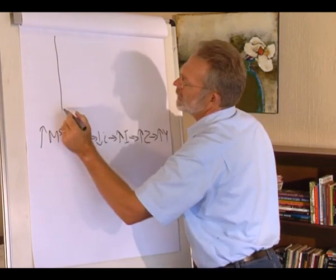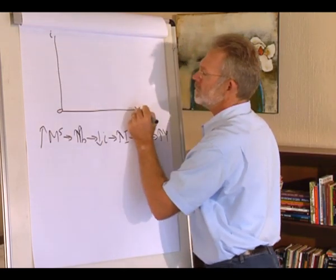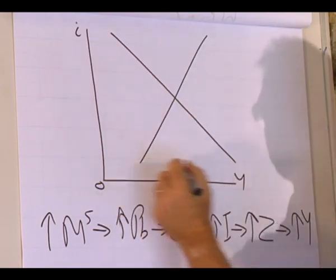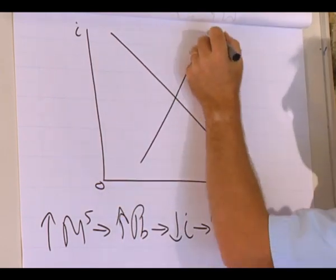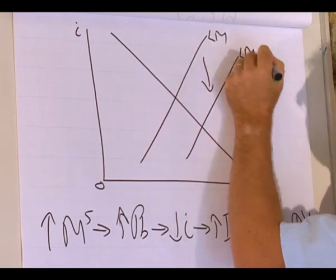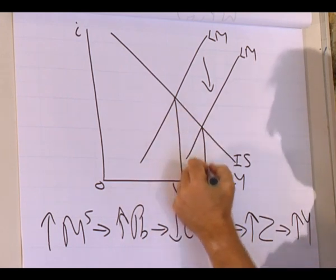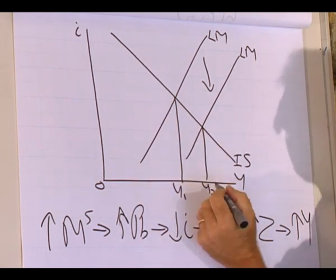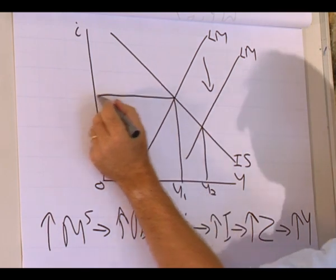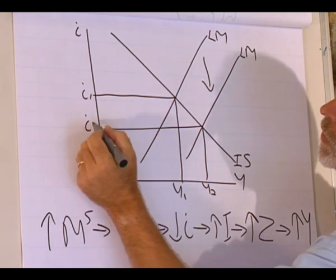Graphically we can show this by a downward shift of the LM curve. The LM curve shifts downwards. The output level increases from Y1 to Y2. The interest rate decreases from I1 to I2.